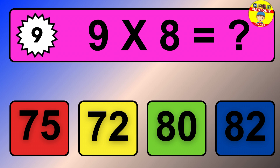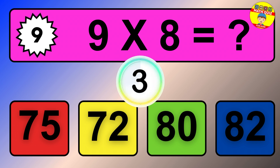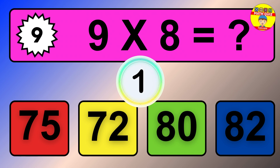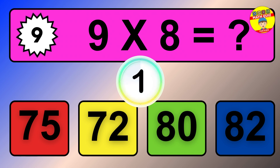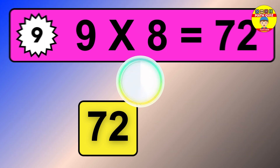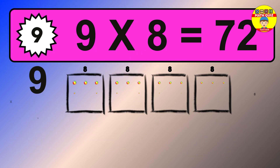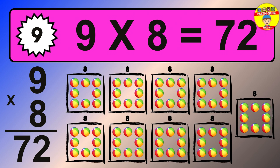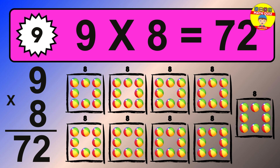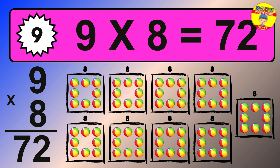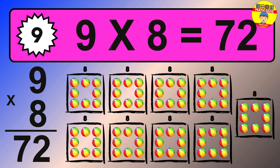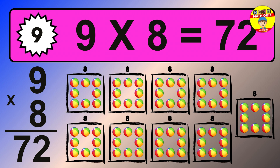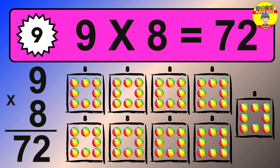Question 9. 9 times 8 equals what? The answer is 9 times 8 is 72. To calculate, we have 9 groups with 8 balls each one. So how many balls do we have? 72 balls.